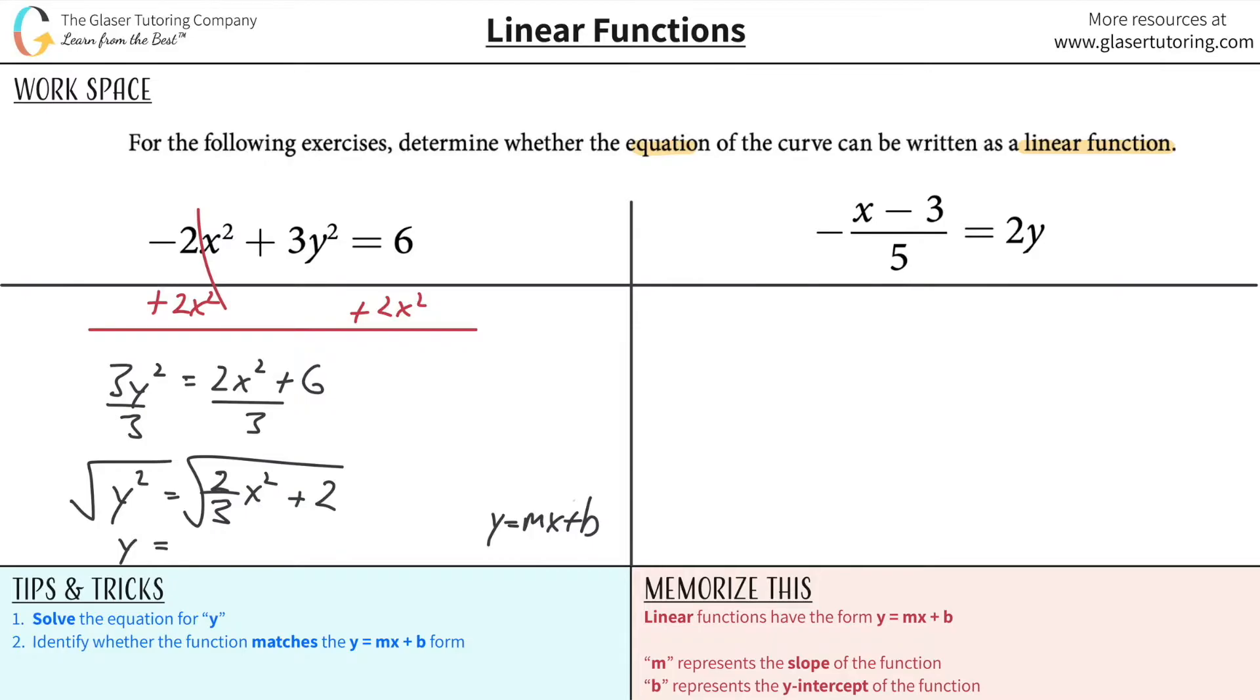Since we have two terms under the radical, we cannot basically distribute this radical to each of the terms. So there's no way I can break this thing down to look like this. It's literally impossible, all right?